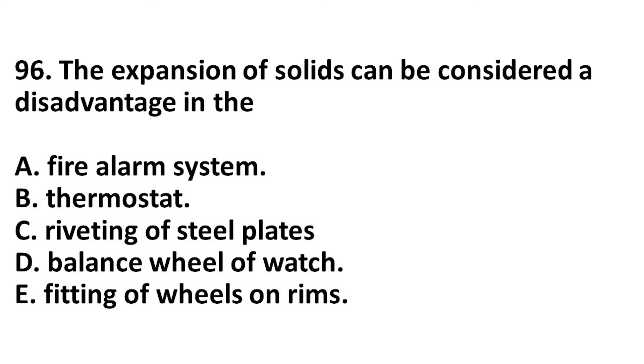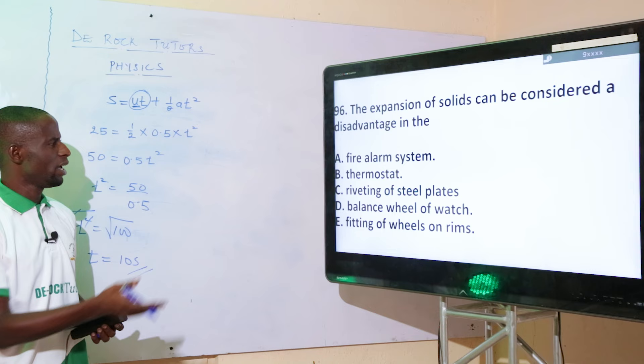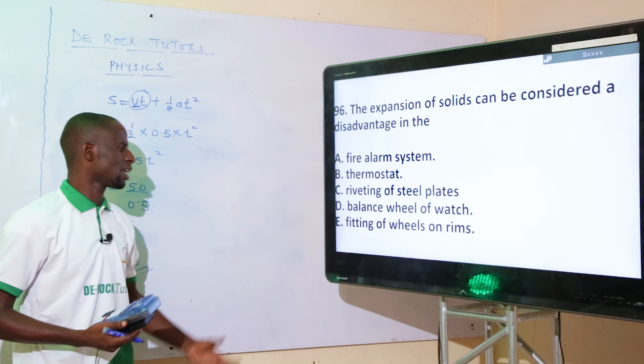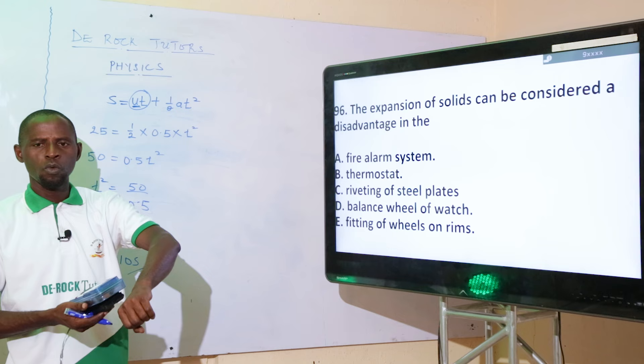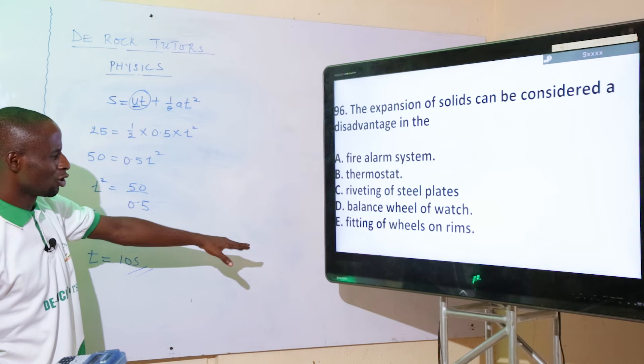The expansion of solids can be considered a disadvantage in what situation? Option A: fire alarm system — advantage. Option B: thermostat — advantage. Option C: riveting of steel plates — advantage. Option D: the balance wheel of a watch — when the balance wheel expands, the watch will malfunction, so this is a disadvantage. Option E: fitting rim of a wheel — advantage. The correct option is option D: balance wheel of a watch.